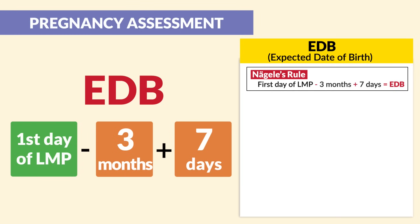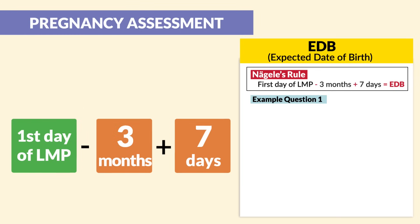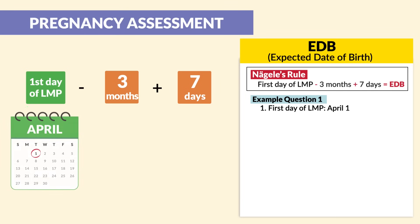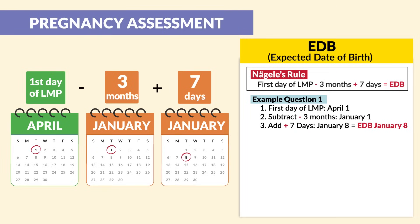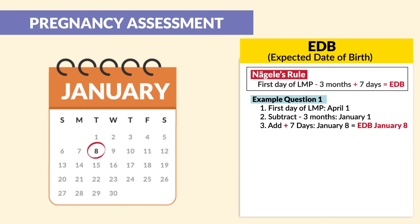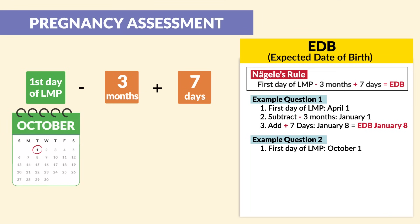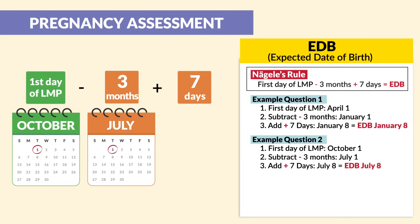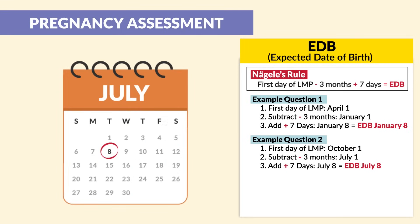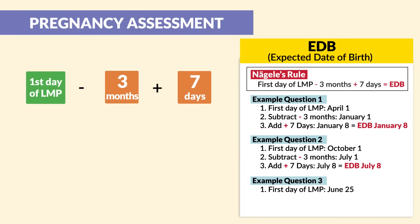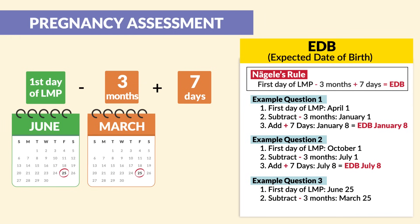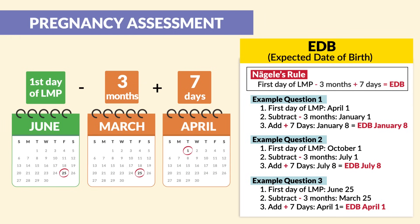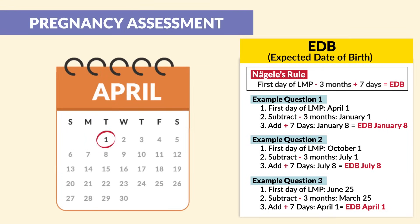Let's do a few examples. Example one: the first day of the last menstrual period is April 1st. Subtract three months — that's January 1st — then add seven days. So January 8th is the expected date of birth. Example two: the first day of the LMP is October 1st. Subtract three months — July 1st — add seven days — July 8th. Example three: the first day of the LMP is June 25th. Subtract three months — March 25th — add seven days — April 1st. So the expected date of birth is April 1st. The baby will be born on April Fools!